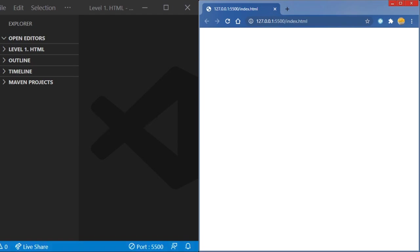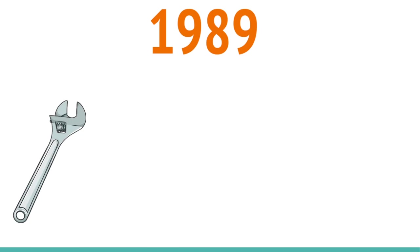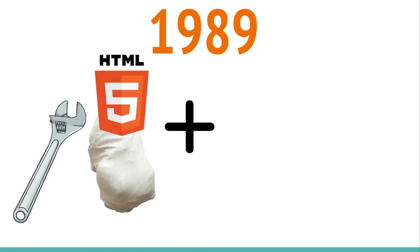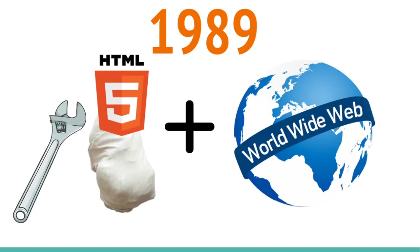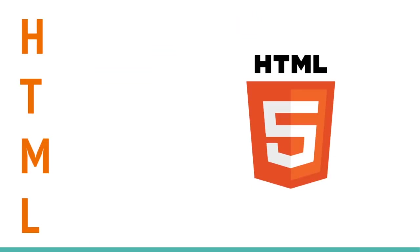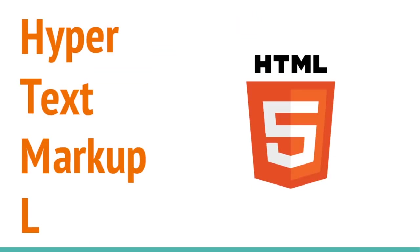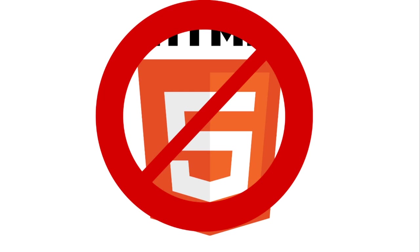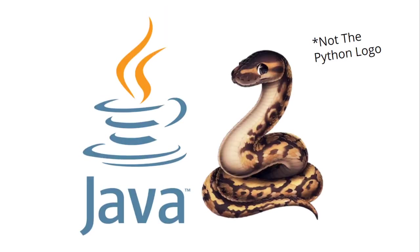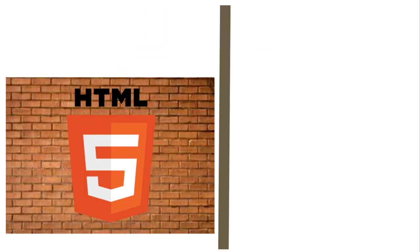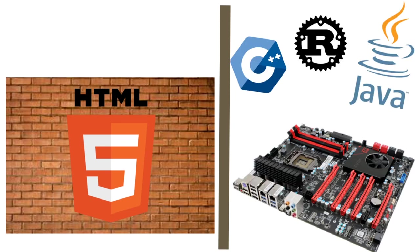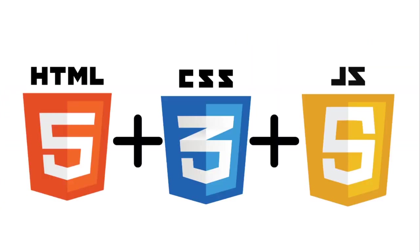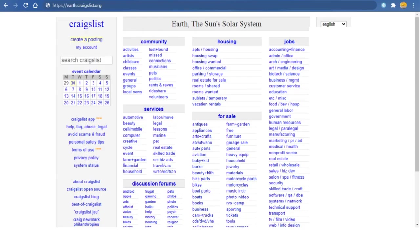Now let's get into some background information about HTML. In 1999, HTML was born as well as the World Wide Web, by the same person. HTML stands for Hyper Text Markup Language and is not a programming language like Java or Python, because it is used for structural purposes and not functional purposes. HTML plus CSS plus JavaScript can make beautiful websites for you and many others to use.